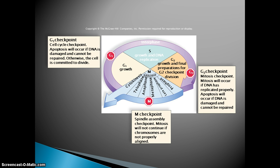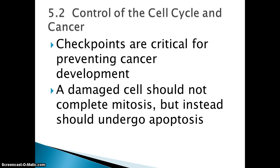Here are the checkpoints in graph form. At G1, right after the G1 growth phase, apoptosis will occur if DNA is damaged and cannot be repaired; otherwise the cell goes on to the next phase. At G2, mitosis will occur if DNA has replicated properly, and apoptosis will occur if DNA is damaged and cannot be repaired. At the M checkpoint, it makes sure the chromosomes are aligned properly — this happens at metaphase. If they're not lined up in the center appropriately, apoptosis will occur. The checkpoints are critical for preventing cancer development — a damaged cell should not complete mitosis but instead should undergo apoptosis, and whether it does determines whether you get cancer.